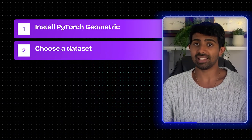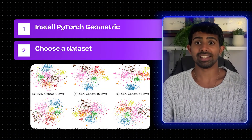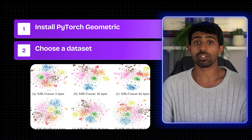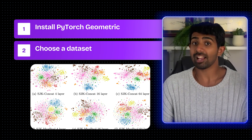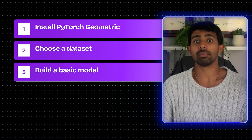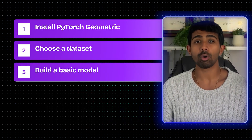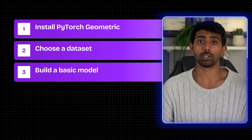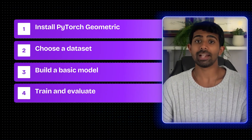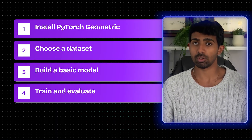Literally, pip install PyTorch Geometric — that's it. Step 2: choose a dataset. Start simple — the Cora dataset is a classic beginner one. It's a network of research papers where nodes are papers and edges are citations. The task is to classify research papers into buckets of similar topics. Step 3: build a base model. With PyTorch Geometric, you can import all the layers you need to build your GNN. Step 4: train and evaluate. Split your graph into training and testing sets, run for a few epochs, and watch the accuracy improve.